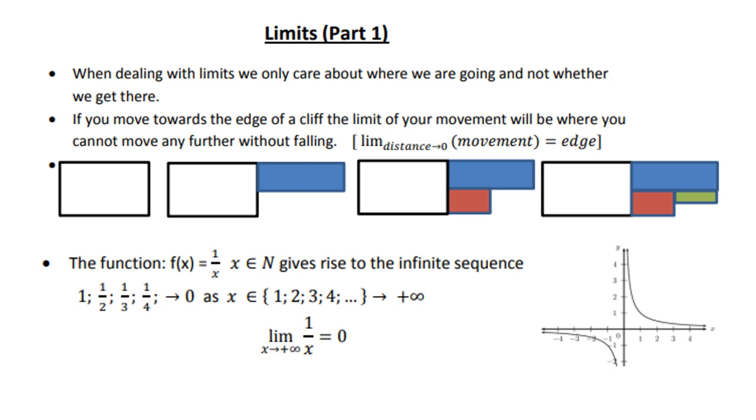The next one: if you look at the function 1 over x, which of course is our hyperbola. So if n is 1, 2, 3, 4, to infinity, that's your natural numbers. If you do your substitution, you'll get 1, a half, a third, a quarter, which moves closer and closer to 0. So therefore the limit of 1 over x, as x approaches infinity, will be 0.